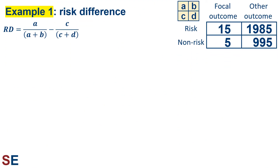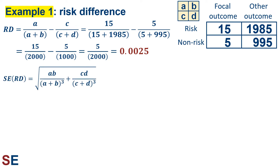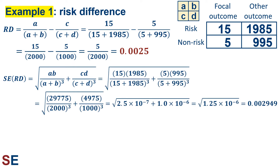Our third statistic is the risk difference, which is calculated using this equation. This equation simply calculates the proportion of observations in each risk category that have the focal outcome and takes the difference. Values larger than 0 indicate relatively more focal outcomes in the risk group, and values less than 0 indicate less. Plugging in the values gives us a value of 0.0025. Individuals in the risk group have a quarter of a percent higher chance — 1 in 400 — of having the focal outcome compared to individuals in the non-risk group. For confidence intervals, we can calculate the standard error directly without natural logs. Plugging in gives us the square root of 1.25 times 10 to the negative 6, which is 0.002949.